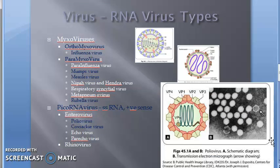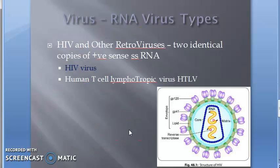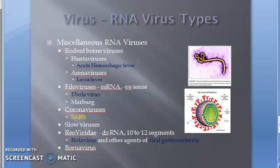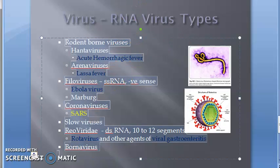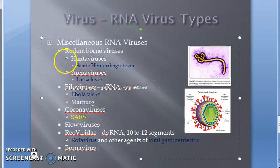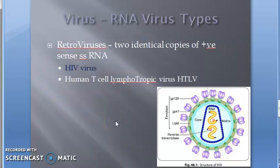Moving on to RNA viruses — pay attention here, there are so many types. You have mixovirus, picoRNA virus, arbovirus, retrovirus, and miscellaneous RNA viruses, under which you have rodent-borne virus, filovirus, coronavirus, slow viruses, reoviridae, and borna virus. We will look at the important ones.